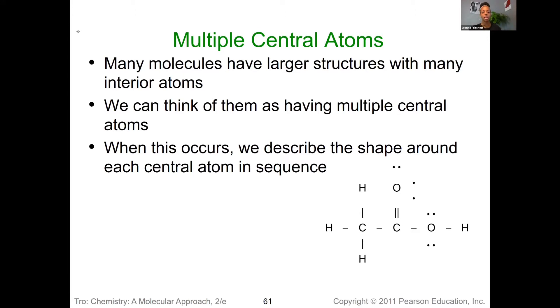So in this example here, we can see we would really have three central atoms. We have one here, one here, and one here. And so for each of those central atoms, we can figure out the electron geometry and the molecular geometry to think about what the overall shape of this particular molecule would be.